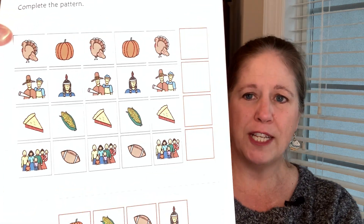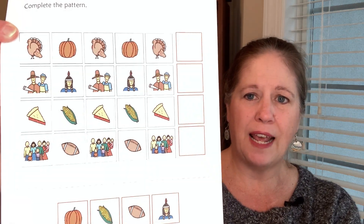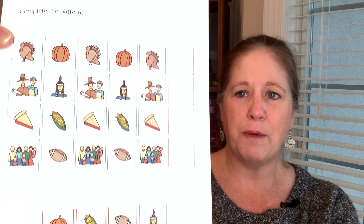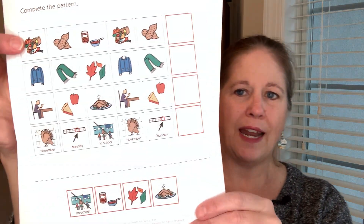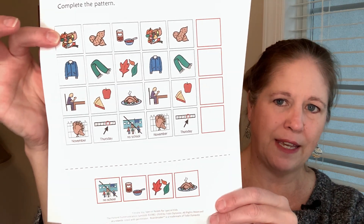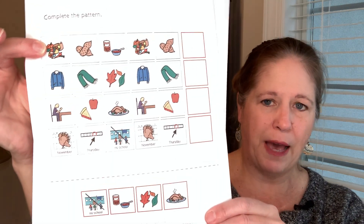You have this one that is an ABAB pattern. And then for students that need a little bit more challenge, you have an ABC pattern. These both come in black and white as well.